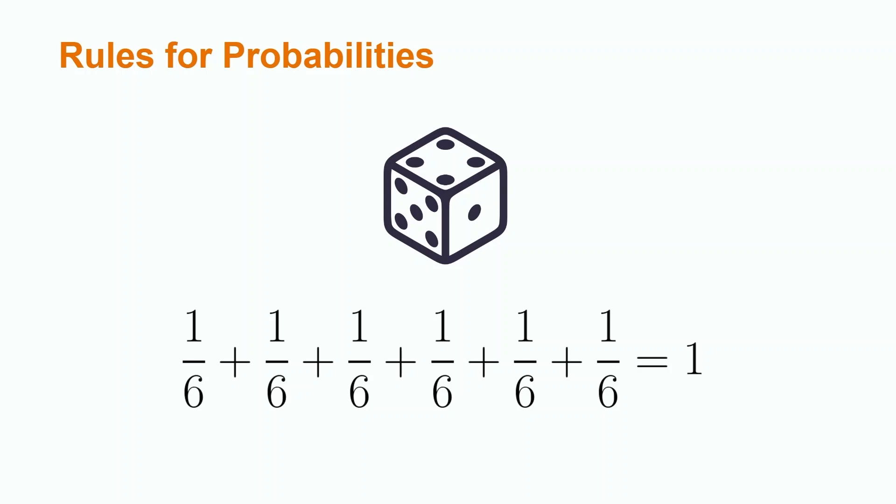For example, a random circumstance with a probability of 0.53 has a 53% chance of happening. When we think about probabilities as percentages, it makes sense that they can never be below 0 or above 1, because nothing can have a negative chance or over 100% chance of occurring.